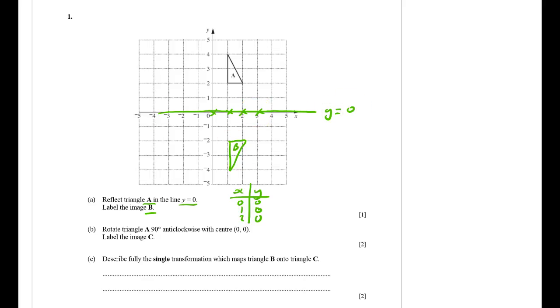Second bit I need to do is rotate triangle A 90 degrees anti-clockwise with center 0, 0. That means I need to trace A, put my cross on the thing on 0, 0, and then rotate it 90 degrees that way and it's going to end up being here.